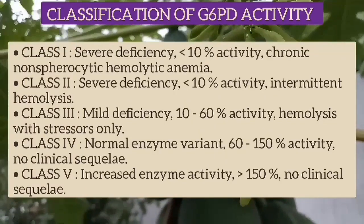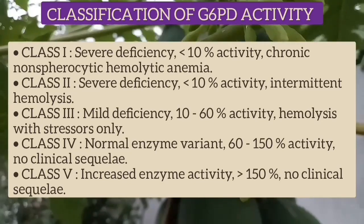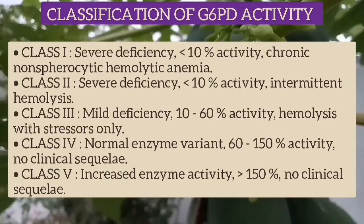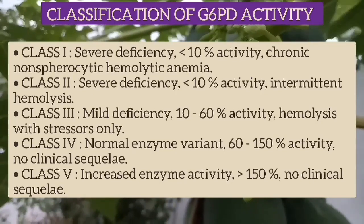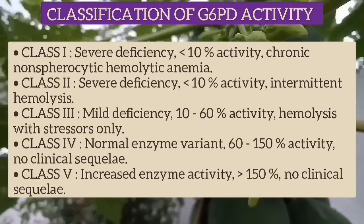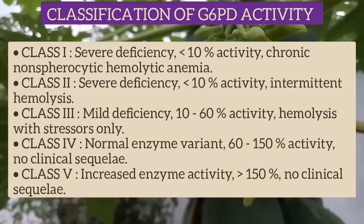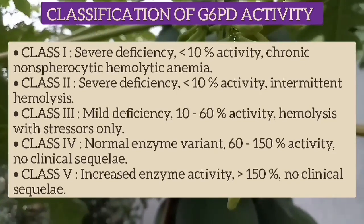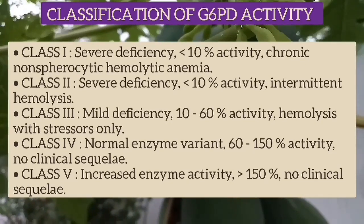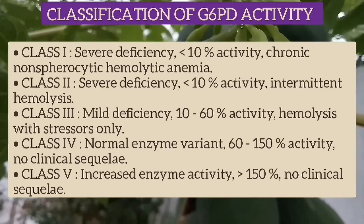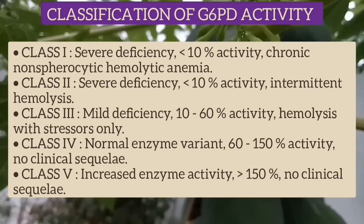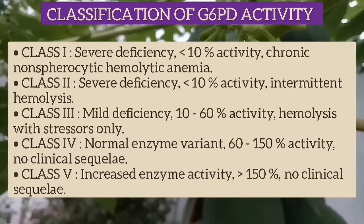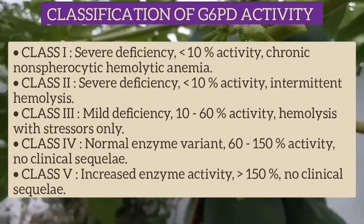G6PD activity is divided into 5 classes. Class 1 is severe deficiency with less than 10% activity, presenting as chronic non-spherocytic hemolytic anemia. Class 2 is also severe deficiency with less than 10% activity but presents as intermittent hemolysis. Class 3 is mild deficiency with activity 10–60% of normal, presenting as hemolysis only with stressors. Class 4 is the normal enzyme variant with activity 60–150% and no clinical significance. Class 5 is increased enzyme activity above 150% and also has no clinical significance.